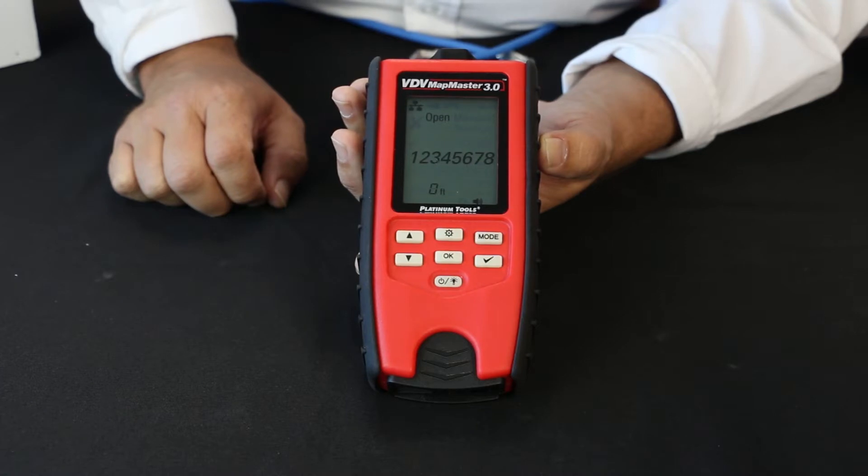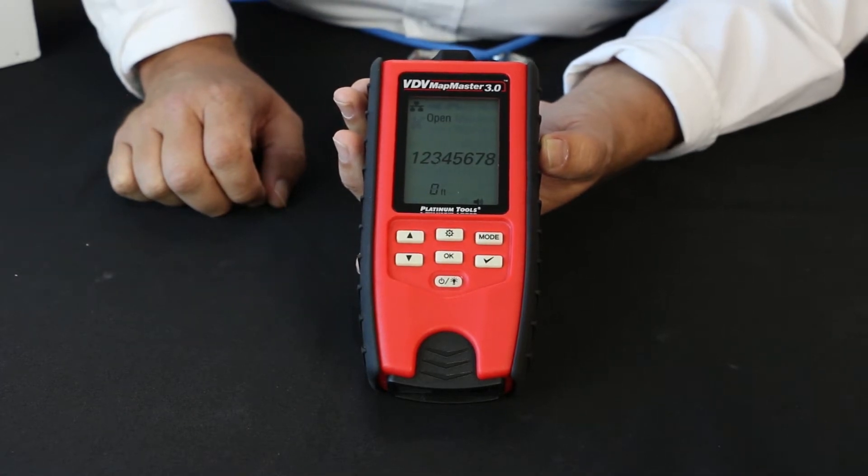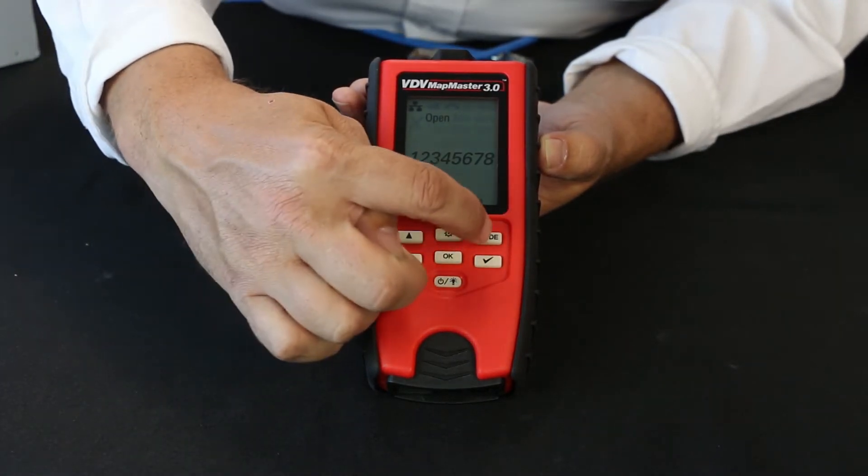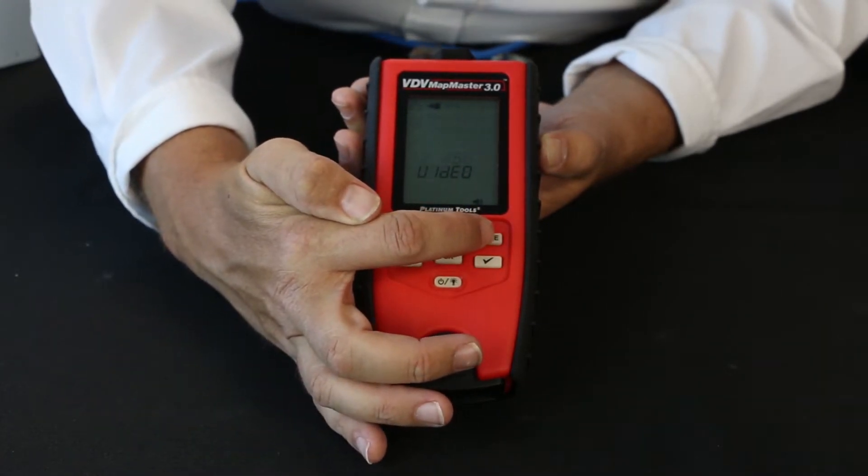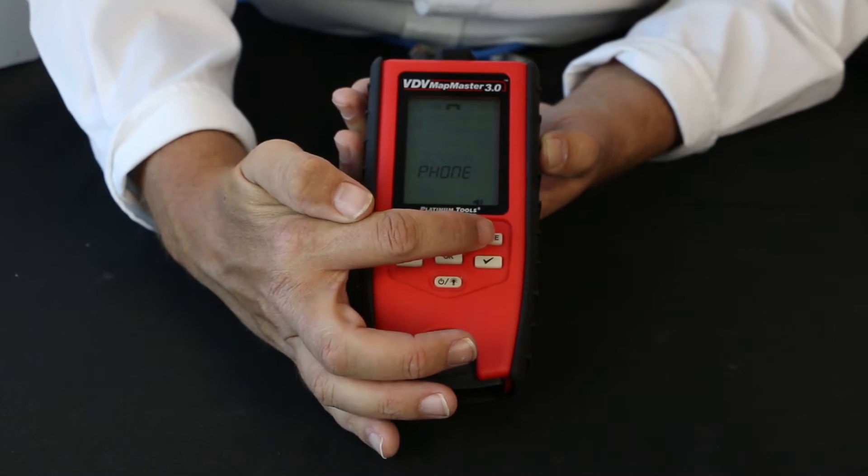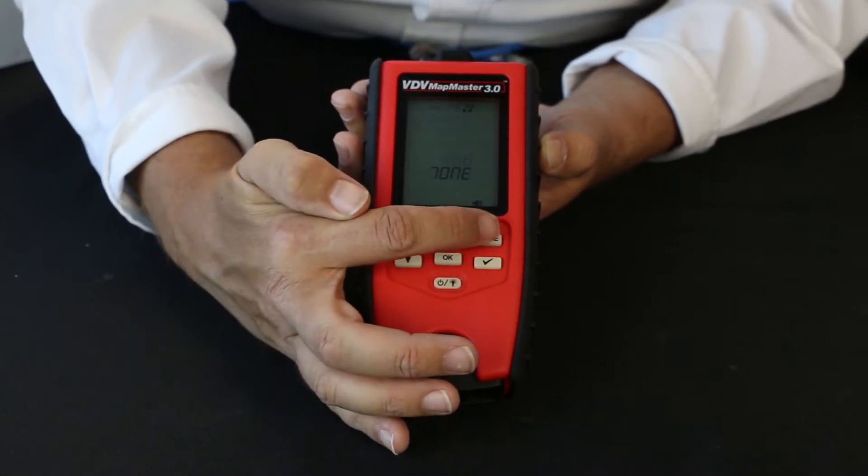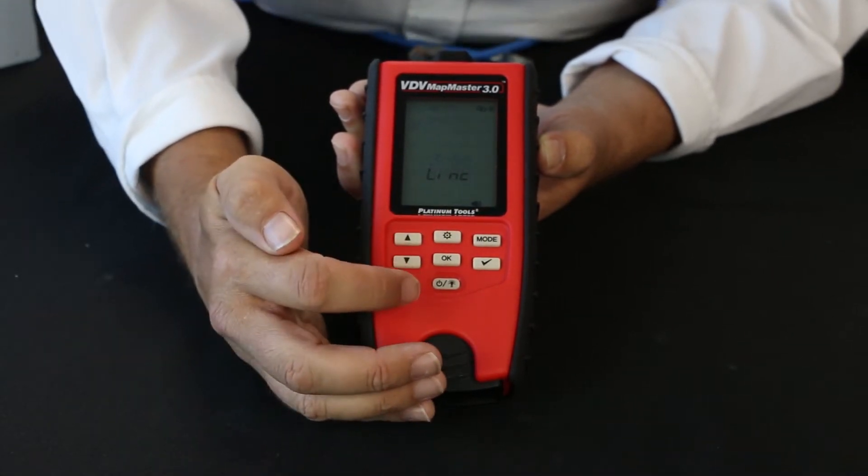Okay, the VDV Mapmaster 3.0. Let's go over the different modes. Here you'll see we have mode for testing data cables, video cables, phone cables, tone generation, and link light.